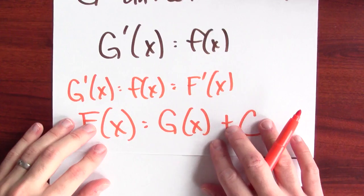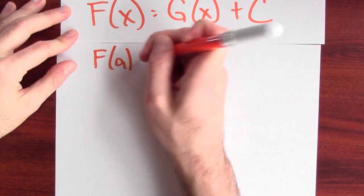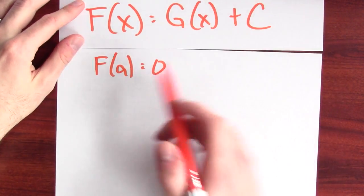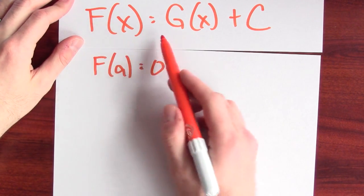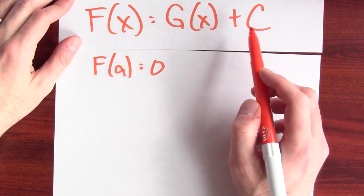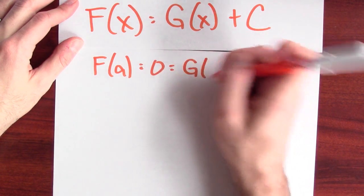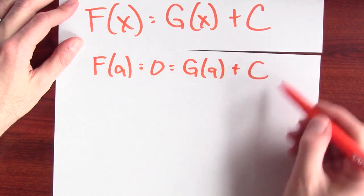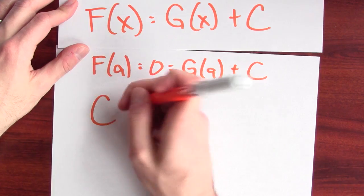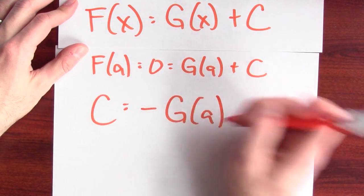What's the constant? Well, the other fact that I know is that F of a is equal to 0. This is another fact that I know about big F. And this fact, and the fact that big F of x is big G of x plus C is enough to recover the constant big C. If big F of a is equal to 0, that's also G of a plus C. So what does C have to be so that if I add it to G of a, I get 0? Well, this means the constant big C must be negative G of a.